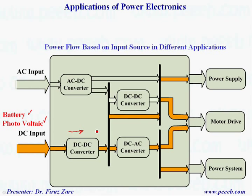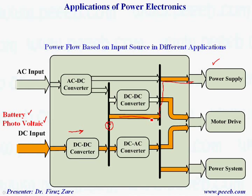Here we get adjustable DC voltage, and if we need to use that one as a power supply, we can directly use it. We can send it to this system to use it as a power supply. Because this voltage is adjustable and regulated, we can send it through this system for a DC drive system, or if we need to change the voltage from DC to AC for different applications, probably variable frequency, variable magnitude, through this converter we can control the output voltage and frequency suitable for AC drives or power systems for reactive power control or active power control.